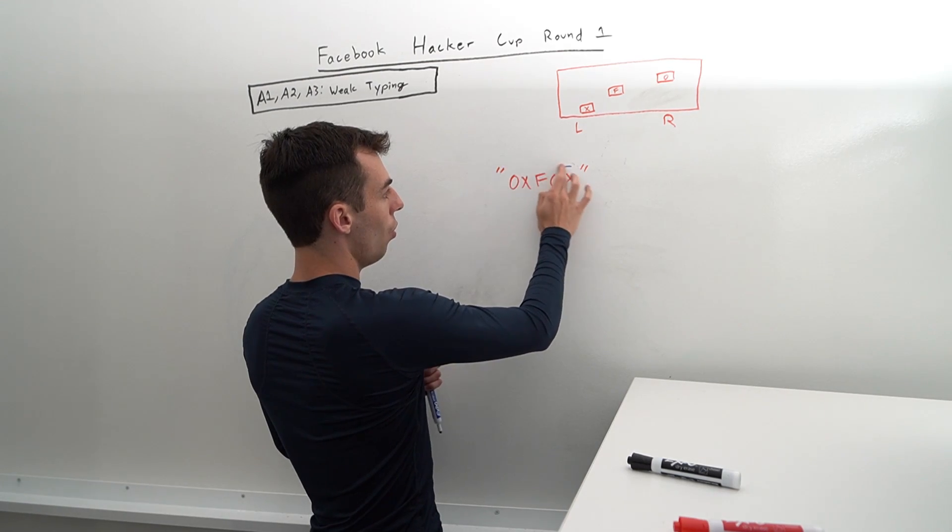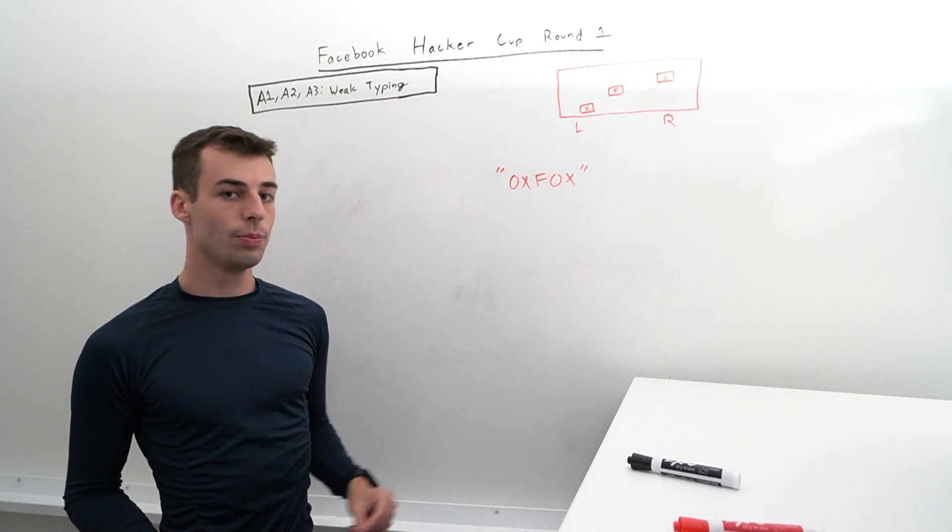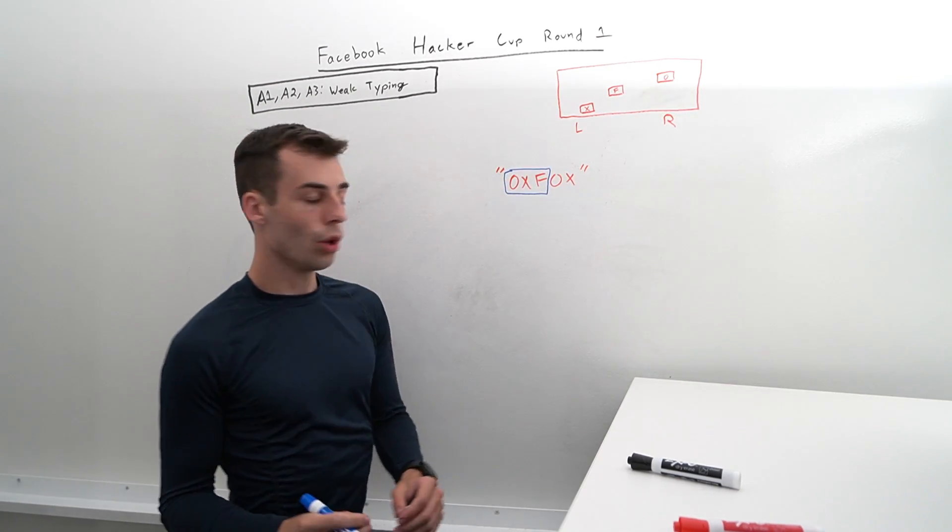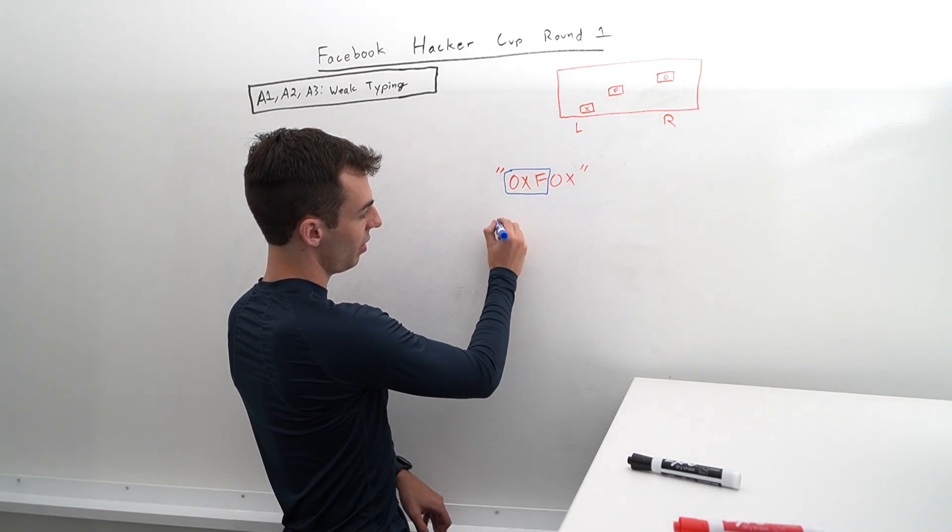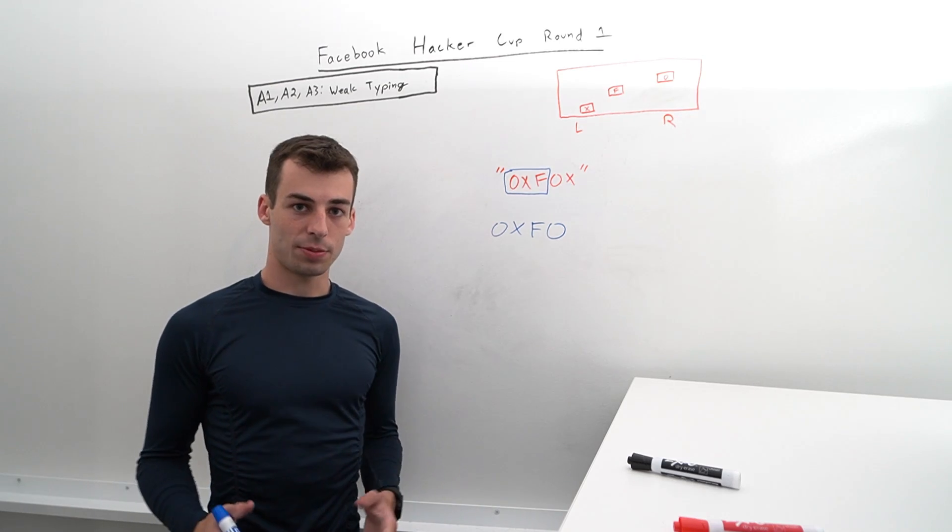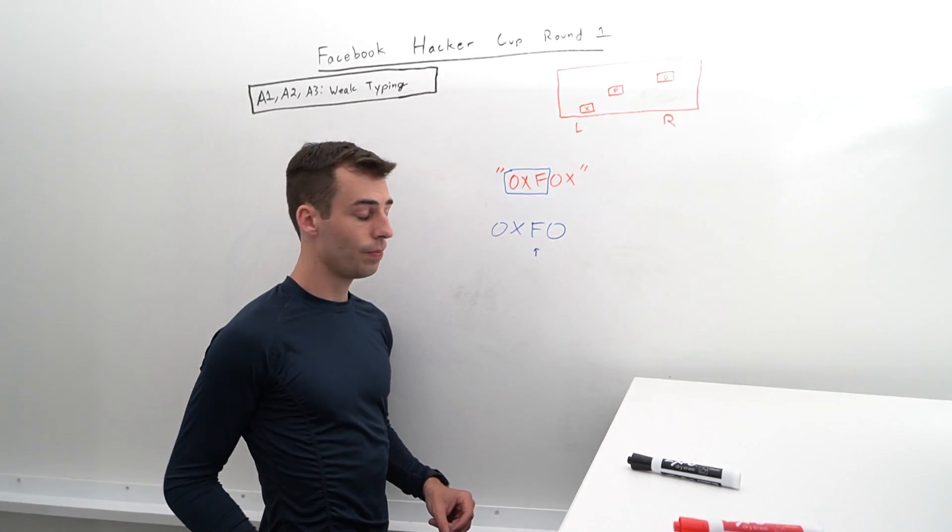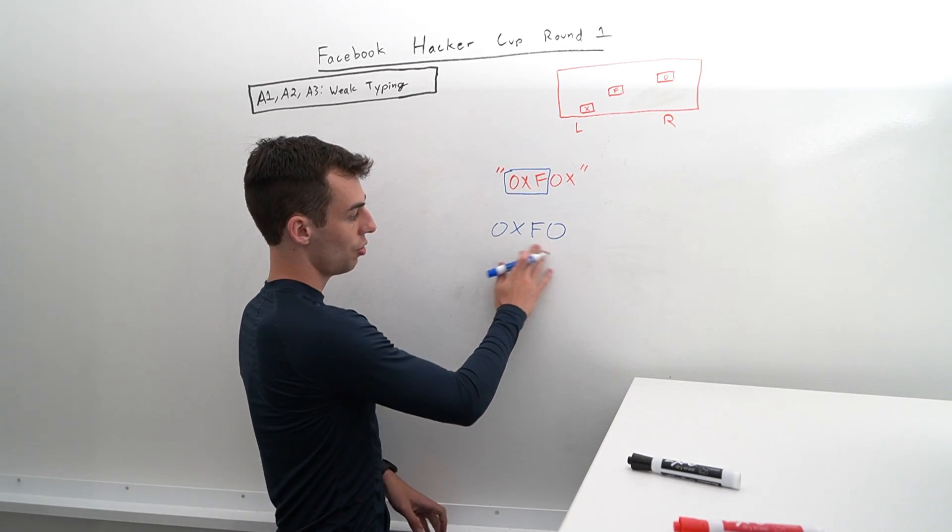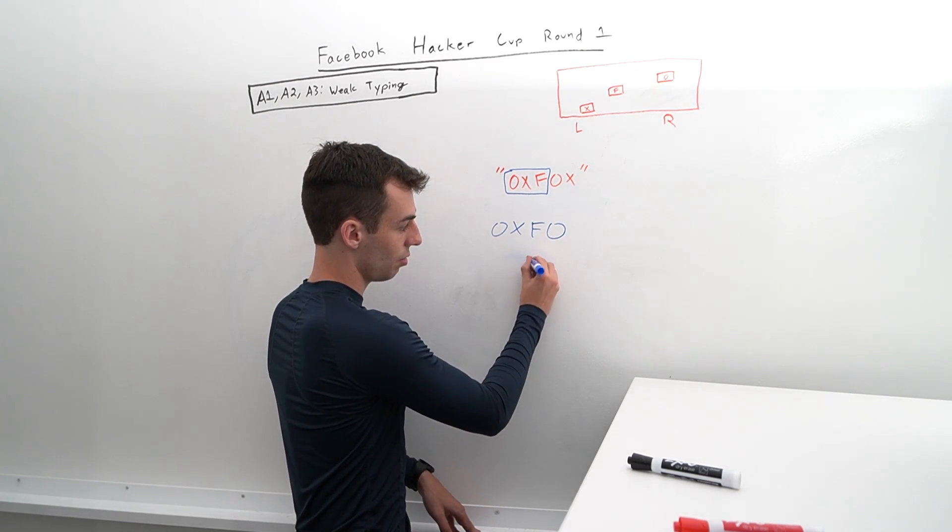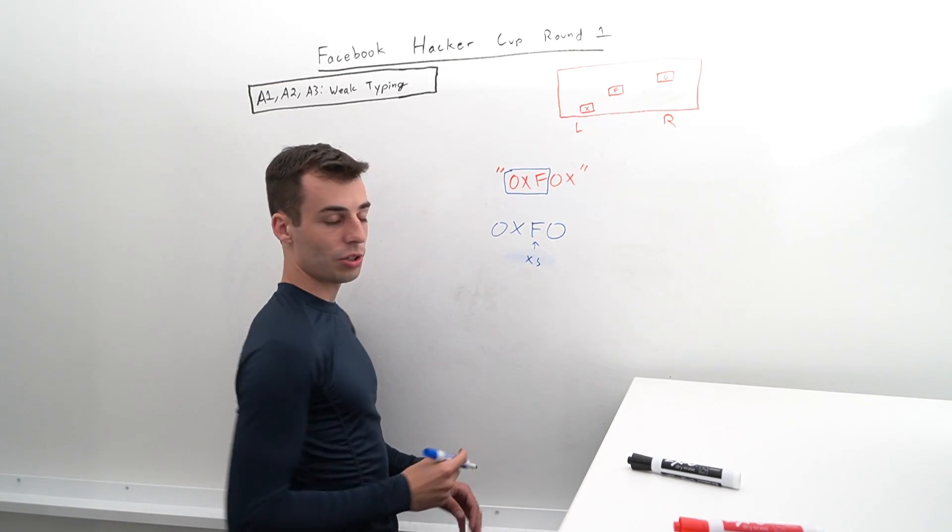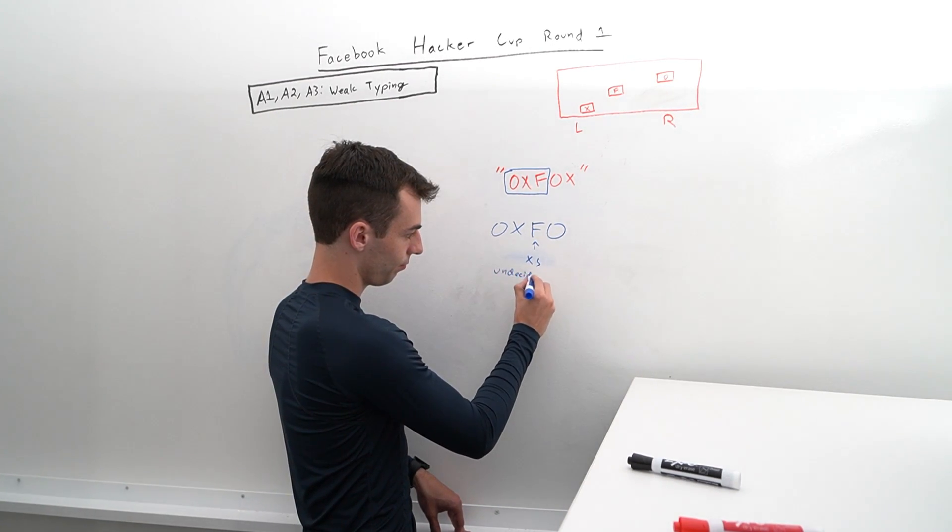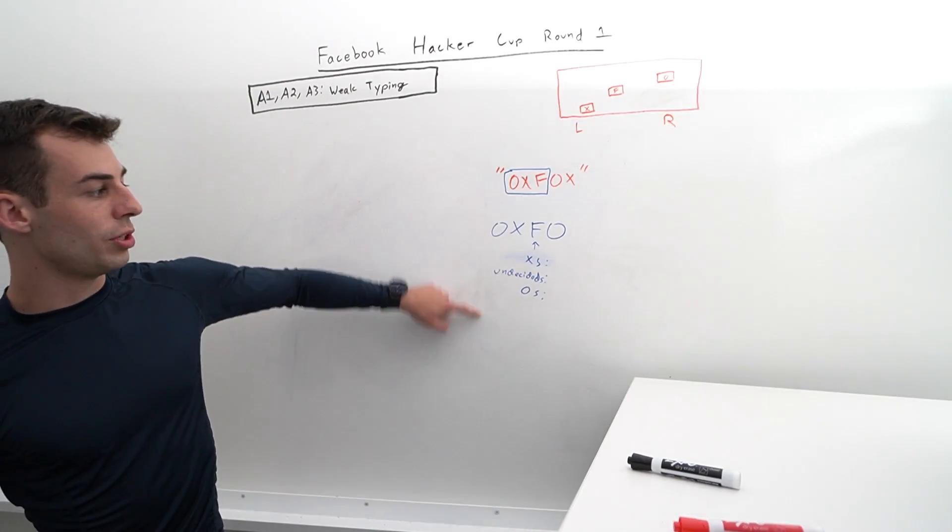So how do we solve this? What we can do is process this character by character, and we can maintain a few things. When we process some prefix, let's say we've processed each of these characters, we're going to store what will change when we go from if this were our input string O, X, F, to if our input string were O, X, F, O. A couple things might change. We want to know for how many of the strings here were we forced to use an X. So how many of these strings ended in an X, or for how many of these strings is the last character that wasn't an F that we typed an X. We also want to know how many O's we have, and how many undecideds we have.